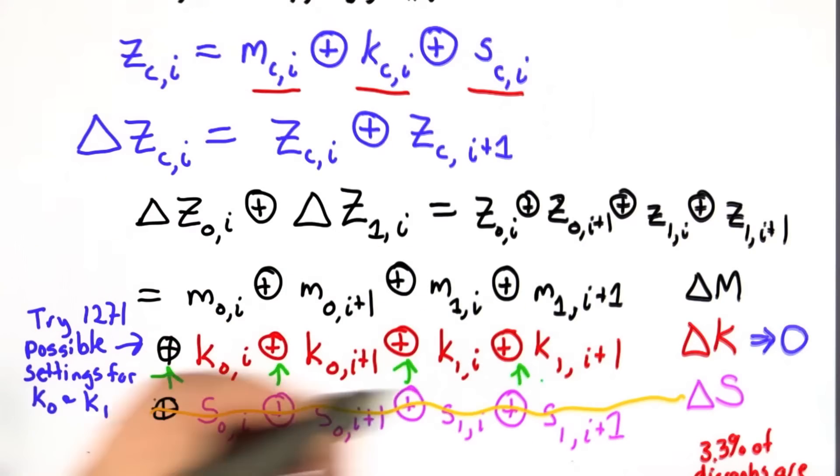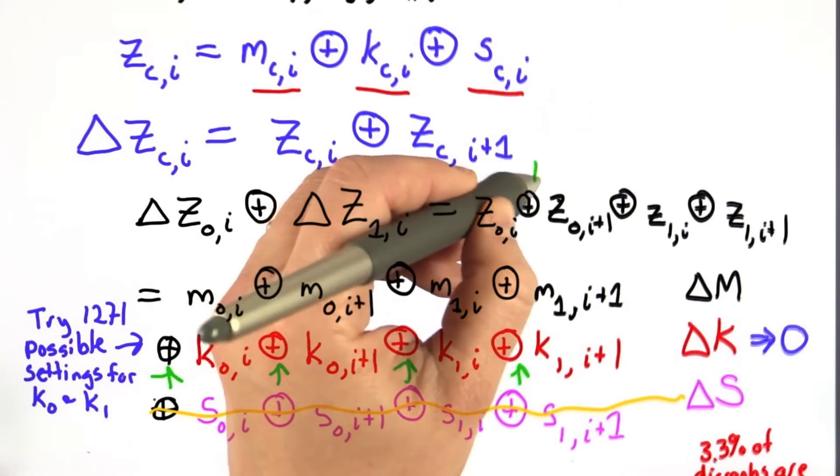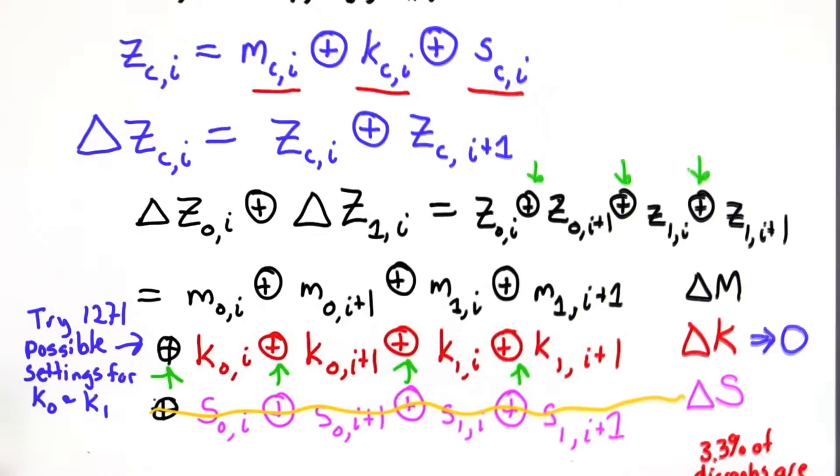And we're XORing those key values with the intercepted ciphertext. So we need to do these XORs, XORing out the key, and XORing the key with the value of the ciphertext. So for each character, we're doing 7 XORs, and we're counting the number of times that's equal to 0.